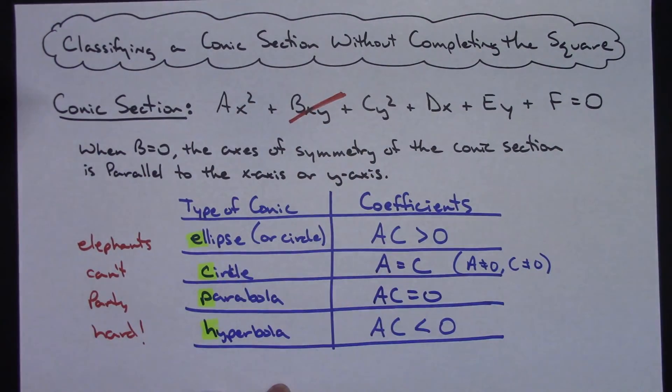So if I've got this equation, and I know my B term is not there because it's zero, A times C is equal to zero, I know I have a parabola, and then if A equals C, then I know I've got a circle.